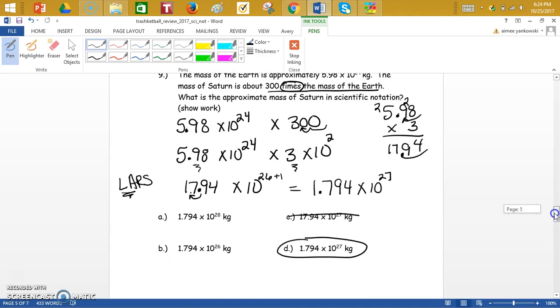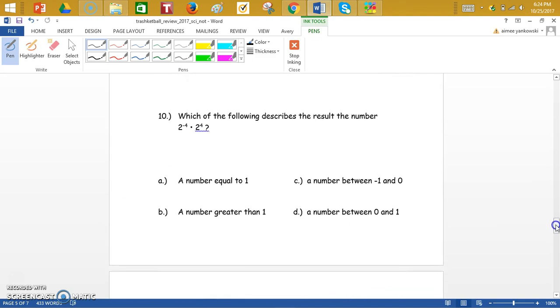Let's just keep going. Which of the following describes the results of this number? Well, let's figure out what this would be. 2 to the negative 4th. Oh, you know what I'm going to actually do? I'm going to use my laws of exponents. If I'm multiplying with the same base, I'm going to keep the base and add my exponents. Negative 4 plus 4. Keep the base of 2. When we're multiplying, we add those exponents. Negative 4 plus 4 is 0. Any number to the 0 power we know is 1. So it's a number equal to 1.